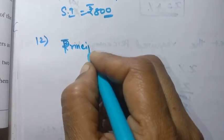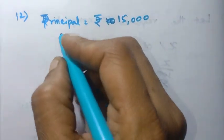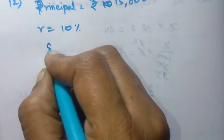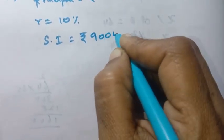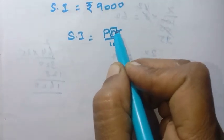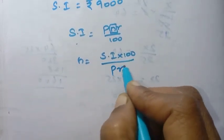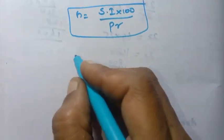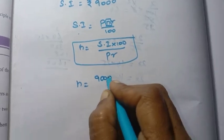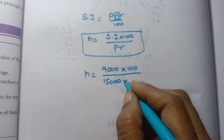The formula to find N is: N = SI × 100 / (P × R). Substituting: N = 9,000 × 100 / (15,000 × 10).